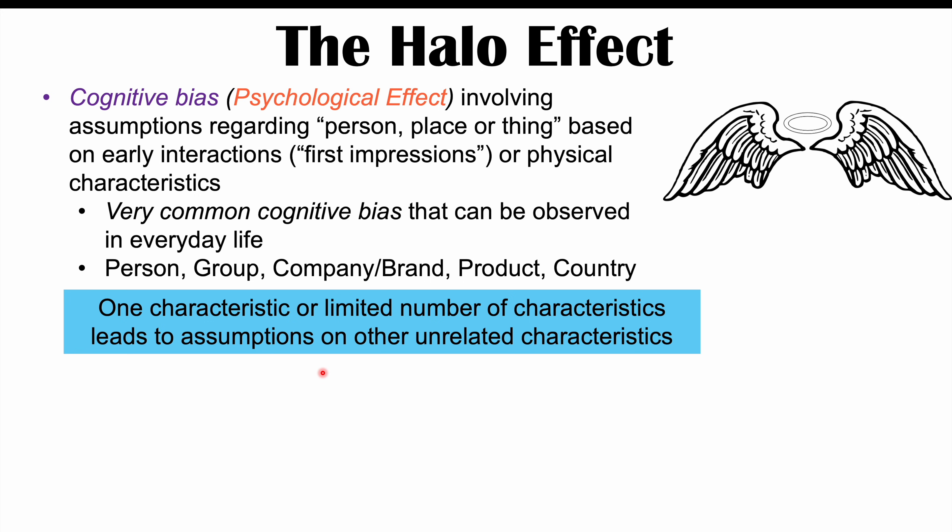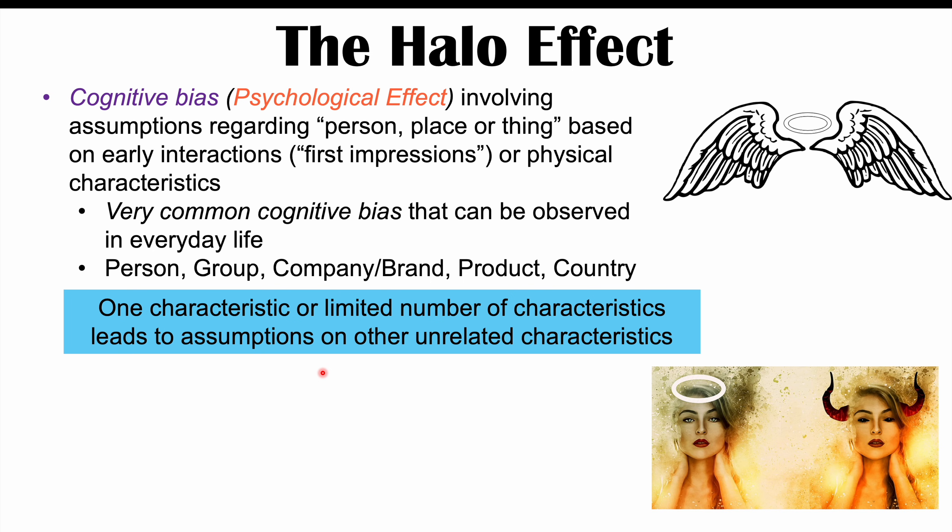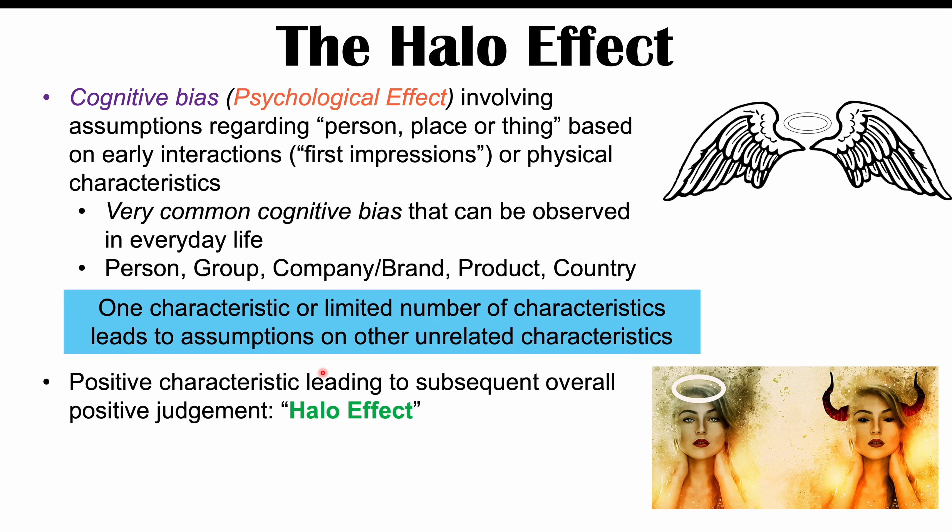The halo effect is the cognitive bias whereby certain characteristics presented to a person will subsequently lead that person to have further assumptions based on that limited number of characteristics. If these characteristics and the resulting assumptions are positive, this can be termed the halo effect.